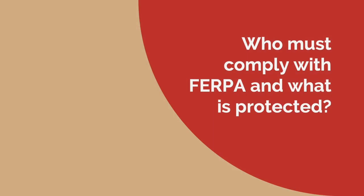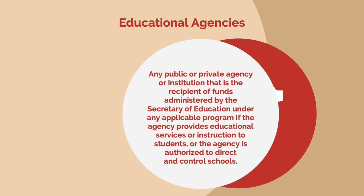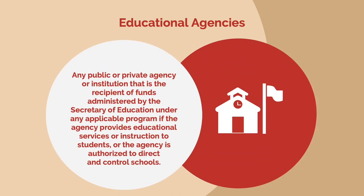Now let's review who must comply with and what is protected by FERPA. FERPA protects the privacy of students' personal records held by educational agencies or institutions. Educational agencies or institutions receive federal funds administered through the Federal Department of Education and provide direct instruction to students, such as schools, as well as educational agencies that direct or control schools, such as school districts and state education departments. Almost all public schools and public school districts receive some form of federal education funding and must comply with FERPA.